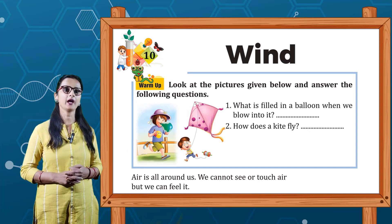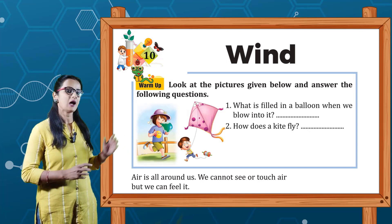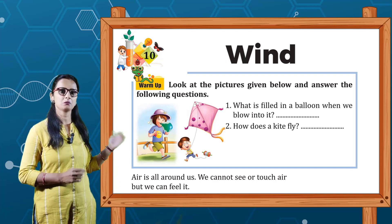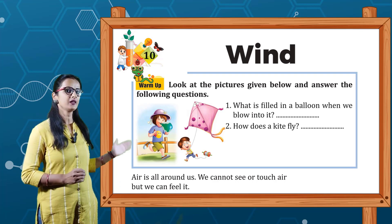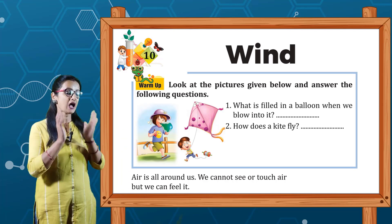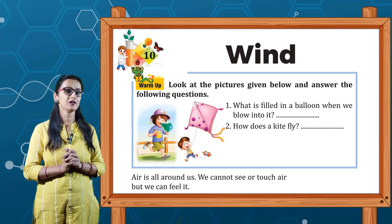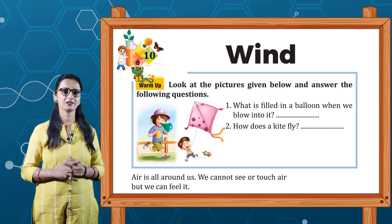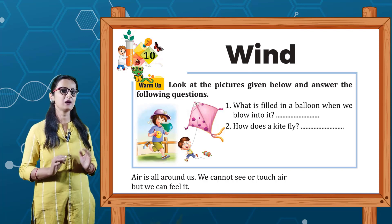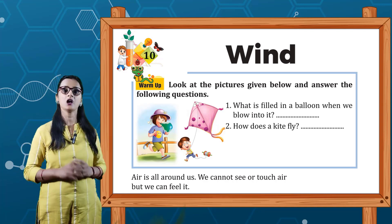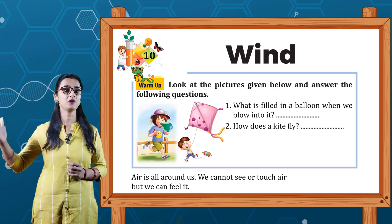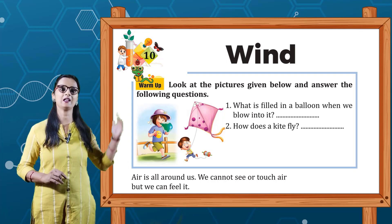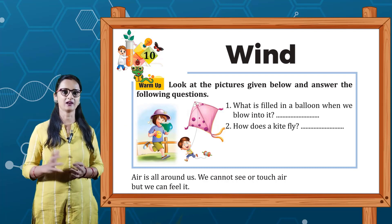Look at the picture given below and answer the following questions. Question number 1: What is filled in the balloon when we blow into it? When you have a balloon, is it water? No — it is air. And how does a kite fly? So now we start the chapter.